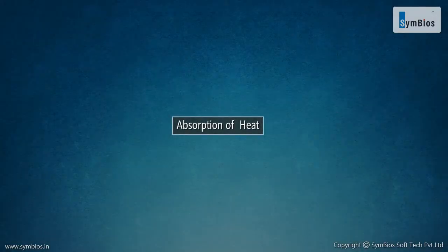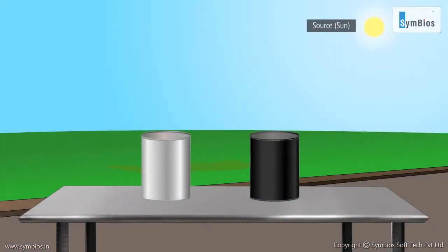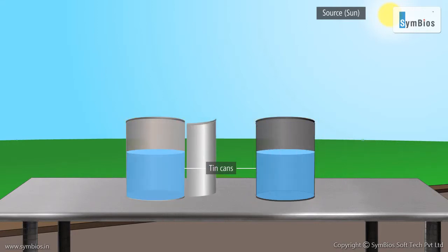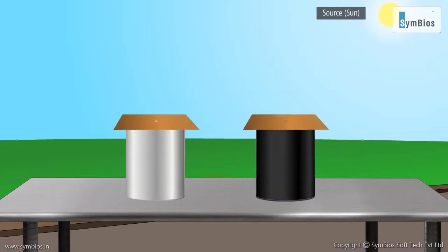Absorption of Heat. Now, let us perform an experiment to observe what kind of bodies absorb radiant heat better. Take two identical thin cans, one painted black and the other white. Half fill both of them with cold water. Cover them with cardboard lids and insert thermometers through the lids. Place both cans in the sun and note the thermometer readings.